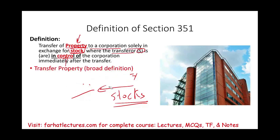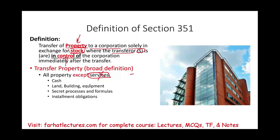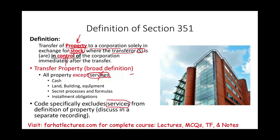What counts as 'transfer property'? Property can include everything except services. If you contribute services, time, or expertise, that is not property — we will cover services in a separate recording. Property includes cash, land, building, equipment, intangible assets, secret processes and formulas, and installment obligations. The code specifically excludes services from the definition of property.